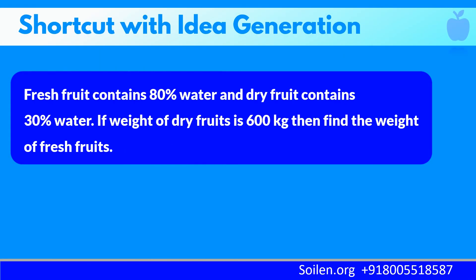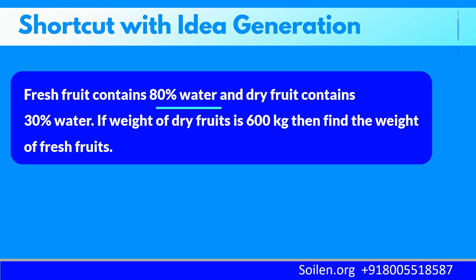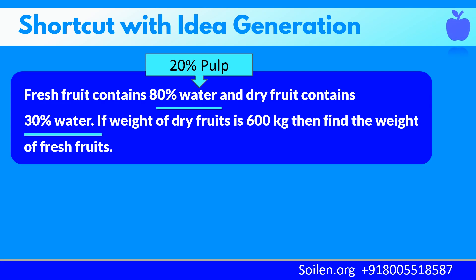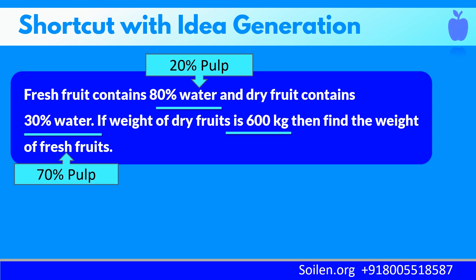Now we will see how we can solve this question very fast, with mental calculation and no need for pen and paper. To apply this, we need to read and analyze the question like this: Fresh fruit contains 80% water — take a pause — think: 80% water means 20% pulp. And dry fruit contains 30% water — again take a pause — 30% water means 70% pulp. If the weight of dry fruit is 600 kilograms — take a pause — 600 kilograms means the value of 100% is given.